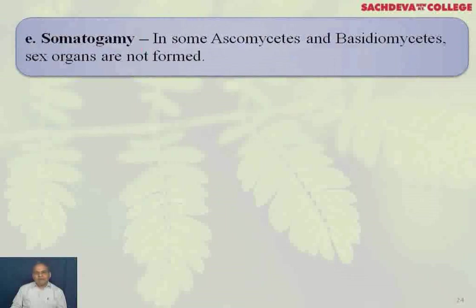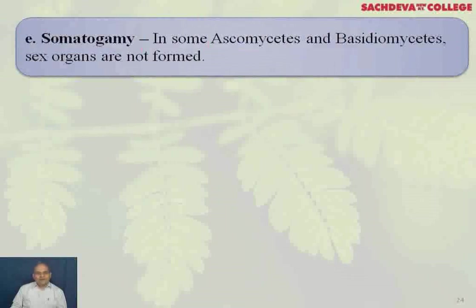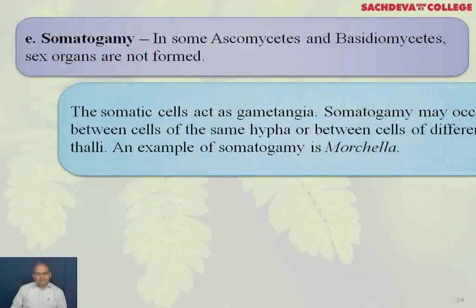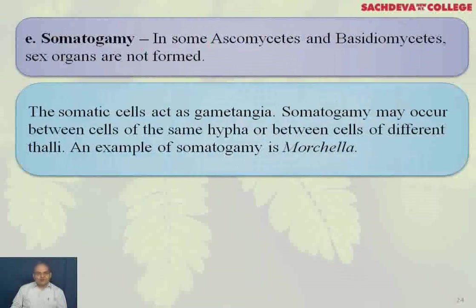Somatogamy: in some ascomycetes and basidiomycetes, sex organs are not formed. The somatic cells act as gametangia. Somatogamy may occur between cells of the same hypha or between cells of different thalli. An example of somatogamy is Morchella.